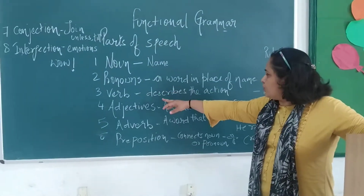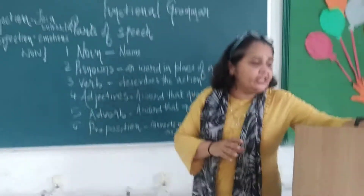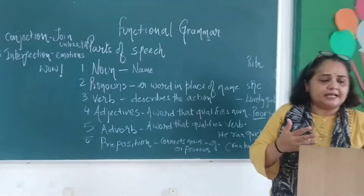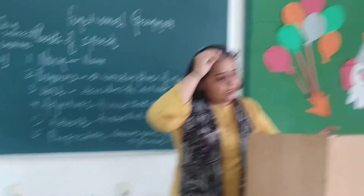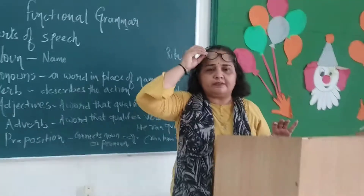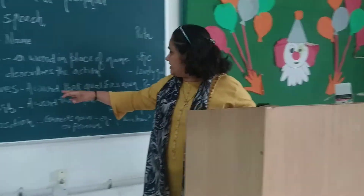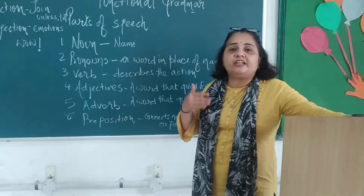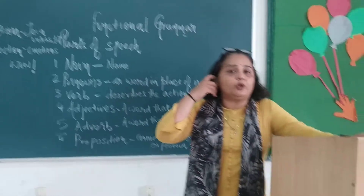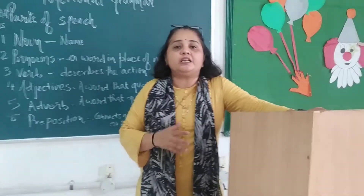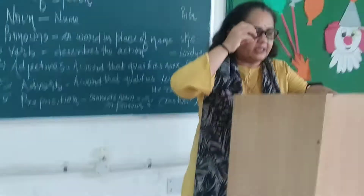Verb is anything which expresses or describes the action. Then comes the adjective, which qualifies the noun. For example, 'poor girl' or 'the girl is poor' — it is describing the noun, how it is. So it is an adjective.